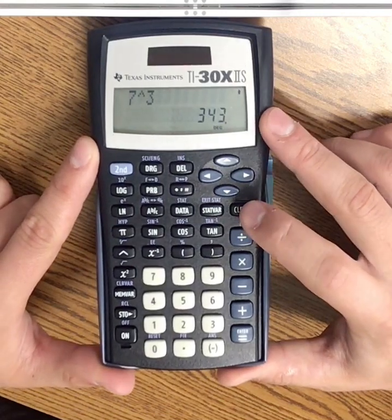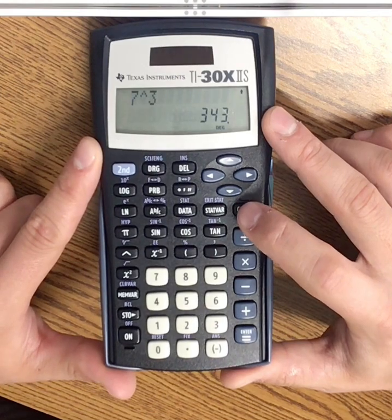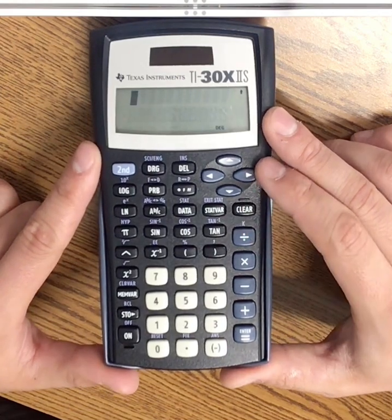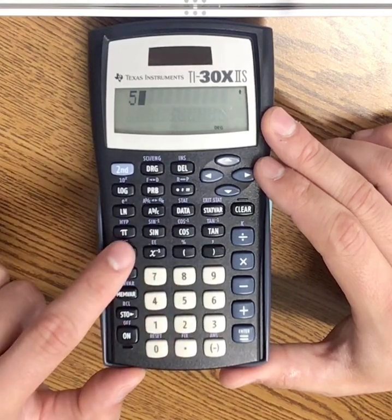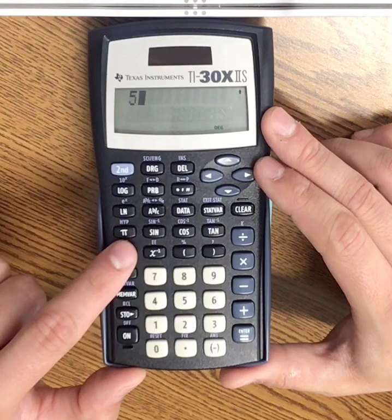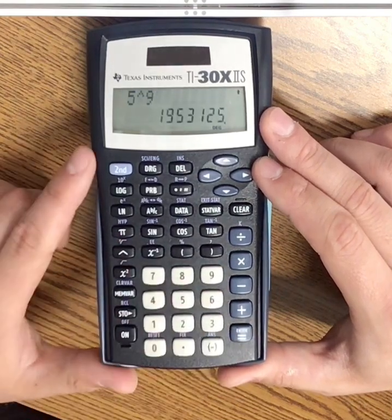Additionally, if I want to do something really big, I could do like 5 to the ninth power. If I want to do that, I simply again click 5, carat, not x squared, carat 9, and I get the answer.